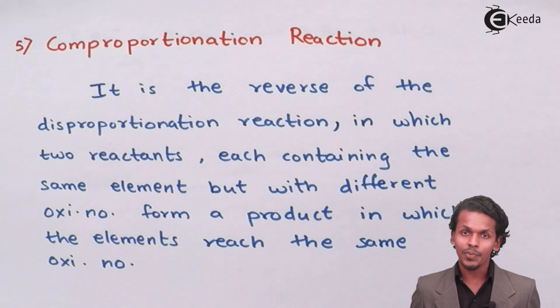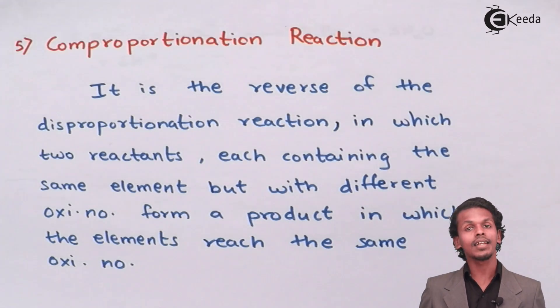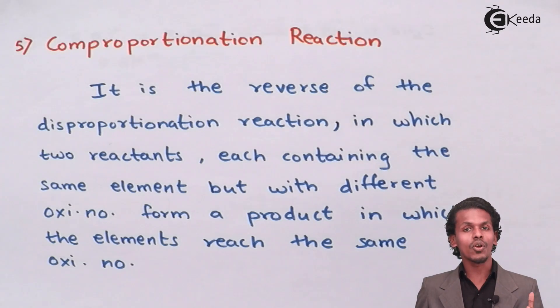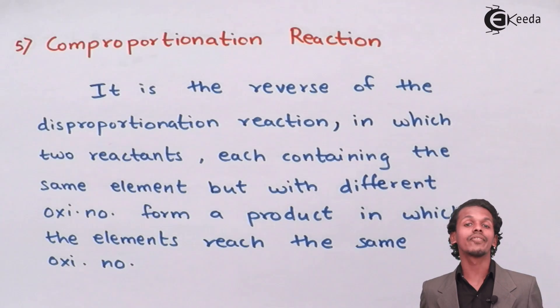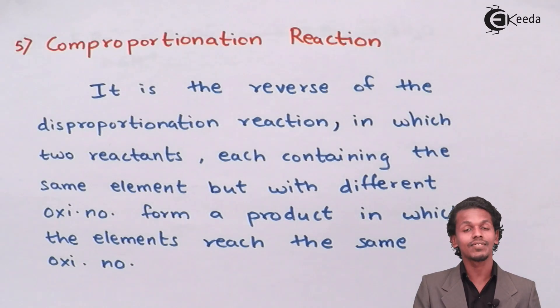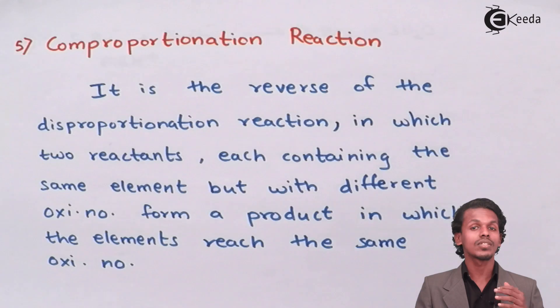In the previous lecture on disproportionation reaction, we learned that one reactant which consists of an element or atom is divided into two products, and both products have different oxidation numbers. Hence that shows an oxidation state as well as a reduction state and was an overall redox reaction.